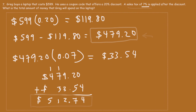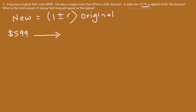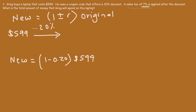Here's another way to get the same answer using this formula: new price = (1 ± R) × original price. The original price is $599 and we want to discount it by 20%. Because it's a discount, R is negative. So it's (1 − 0.20) × $599, which is 0.80 × $599 — that's 80% of $599, giving us $479.20.